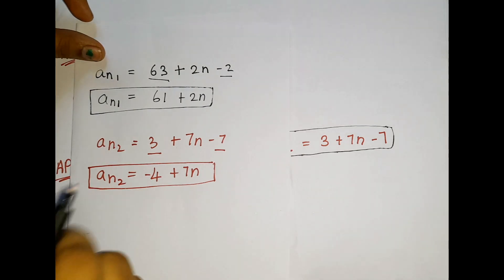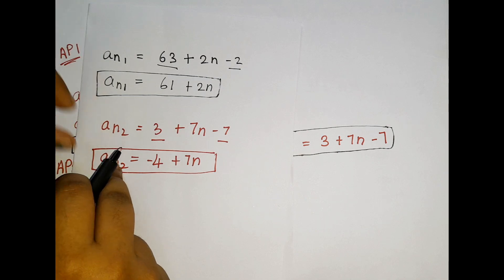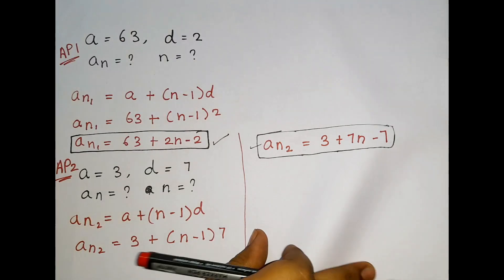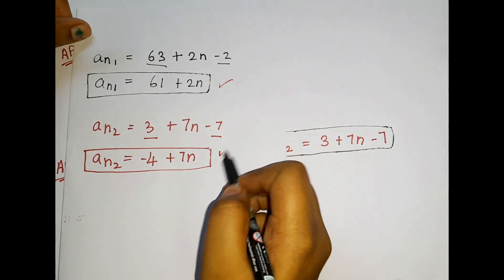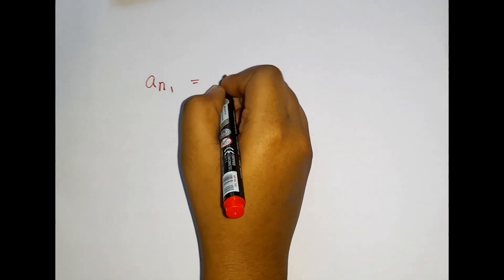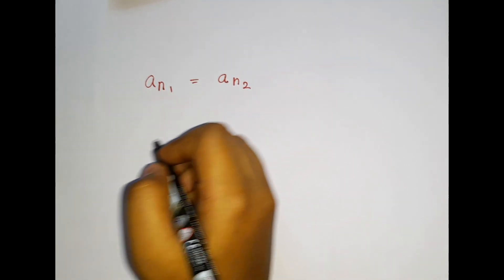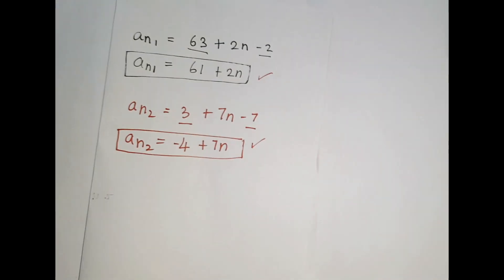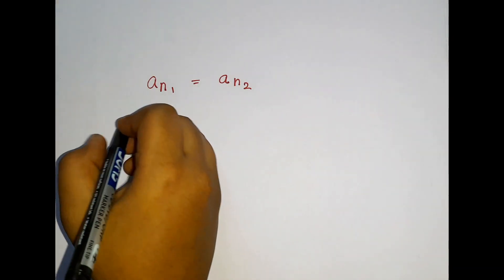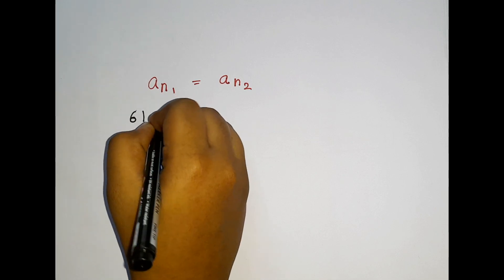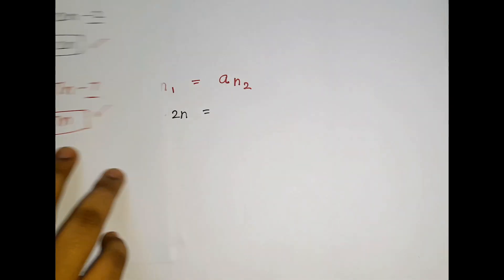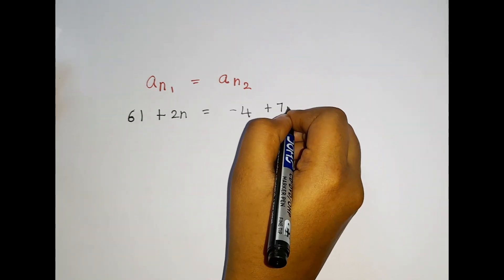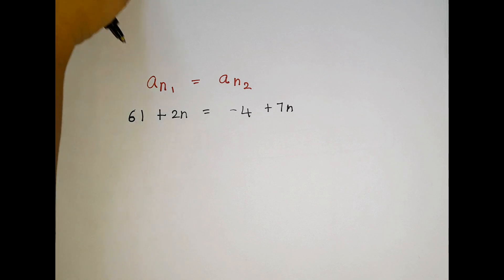I am going to assume these two values are equal. Why? Because it is mentioned in the question. So we set Aₙ₁ = Aₙ₂: 61 + 2n = −4 + 7n.